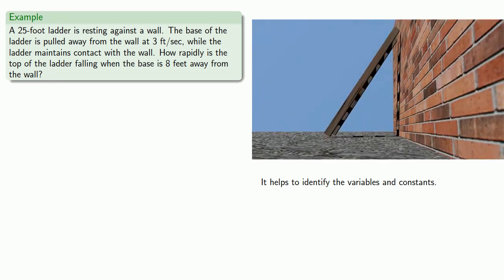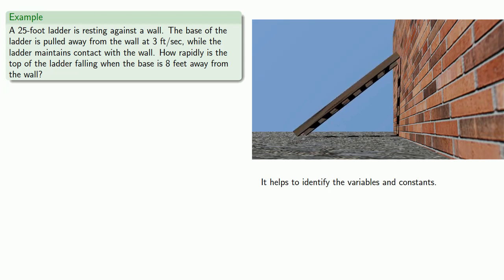So it helps to identify the variables and constants. So let's let our ladder slide a little bit. So we see that the distance to the top of the ladder and the distance of the base of the ladder from the wall are variable quantities. So we need to represent them as variables.